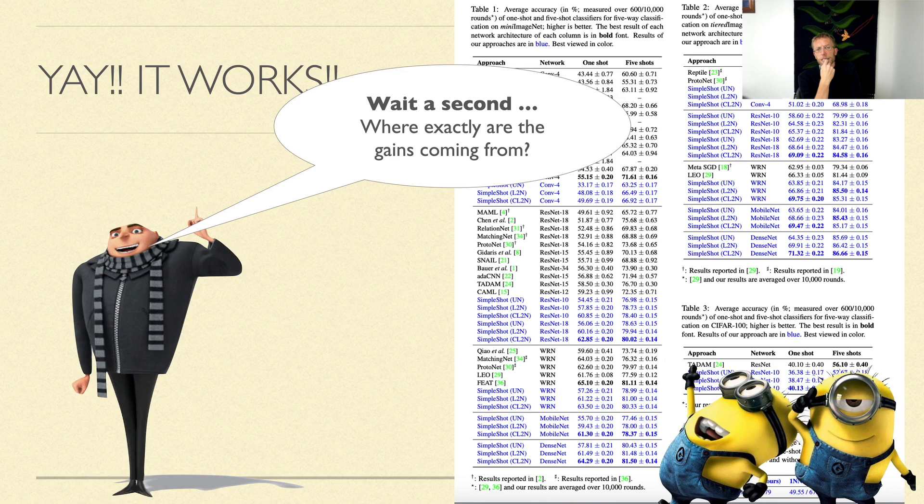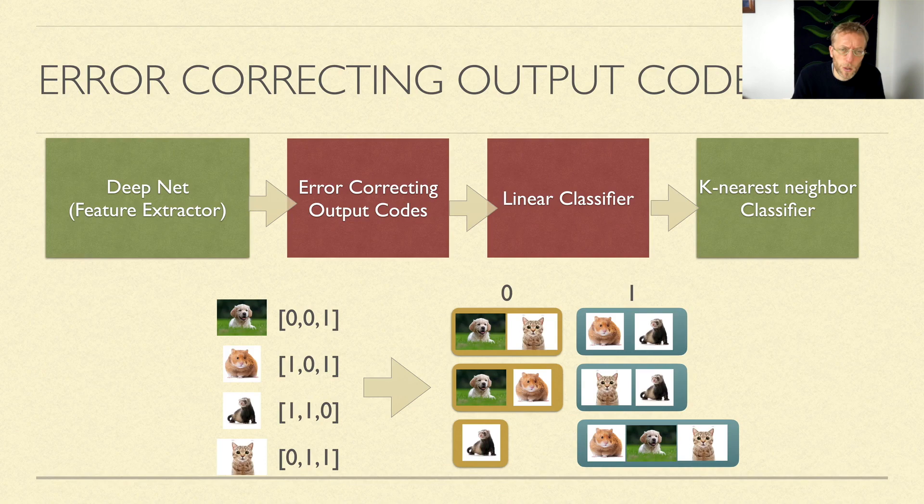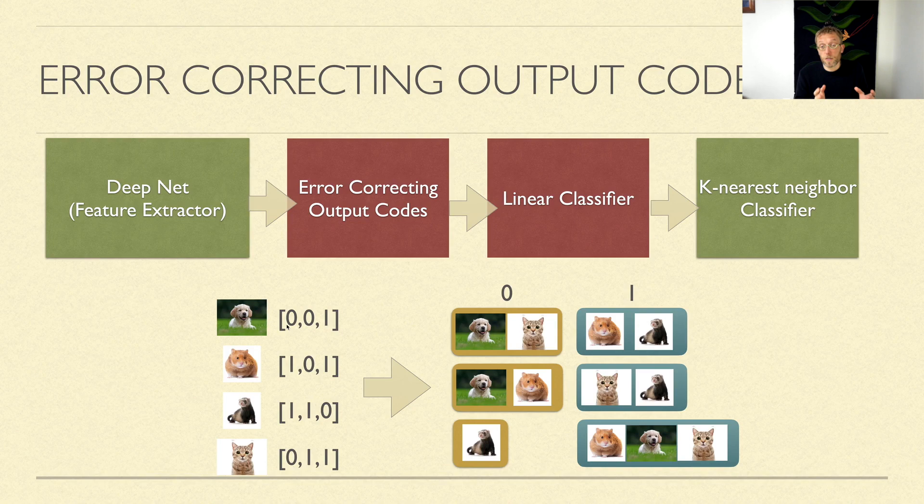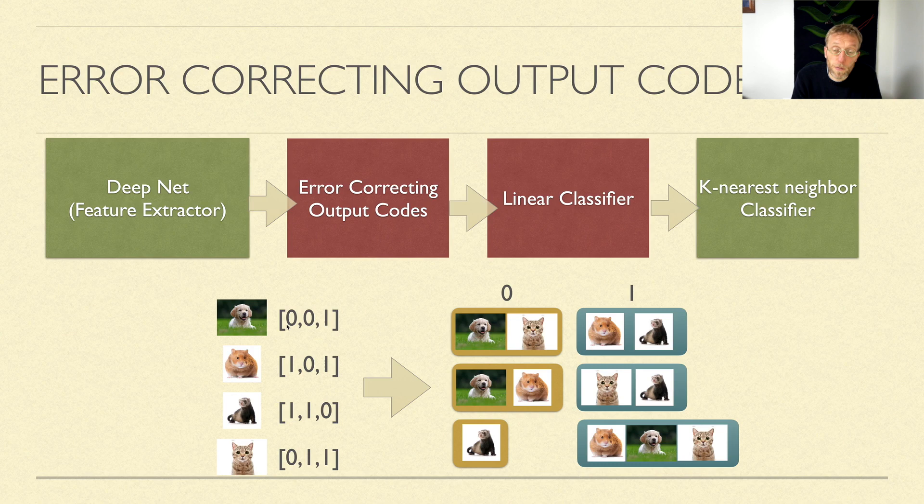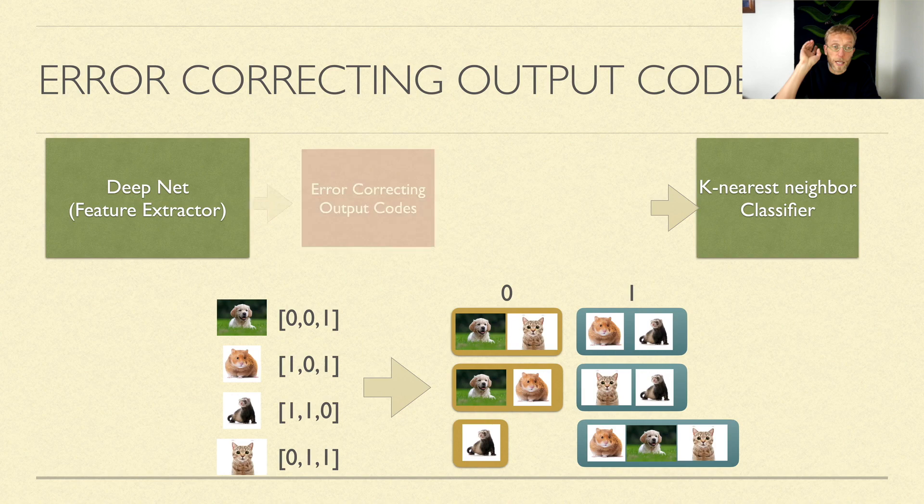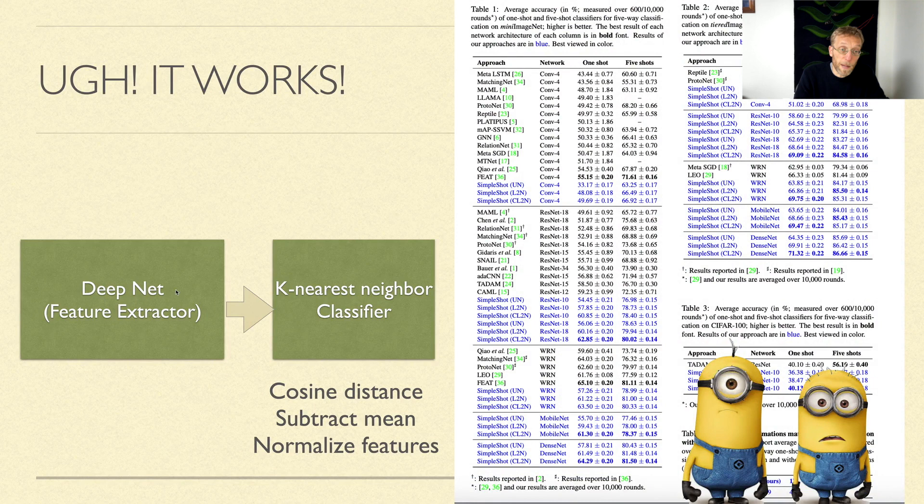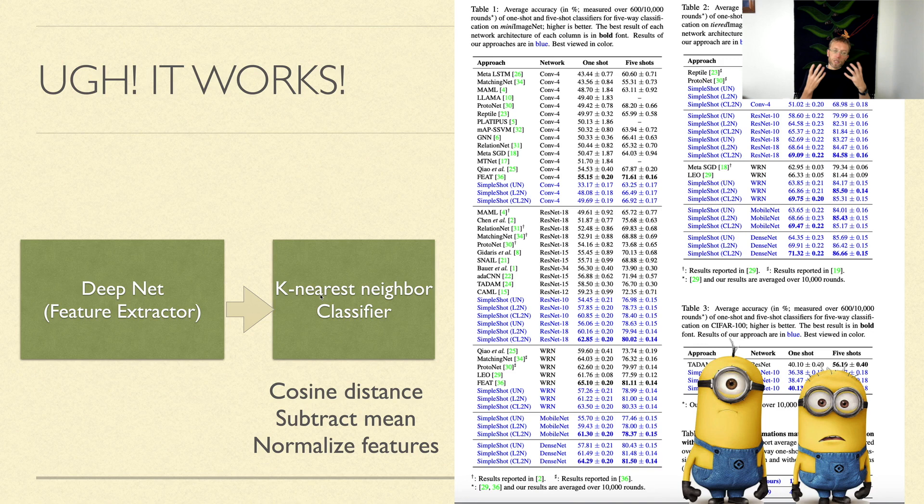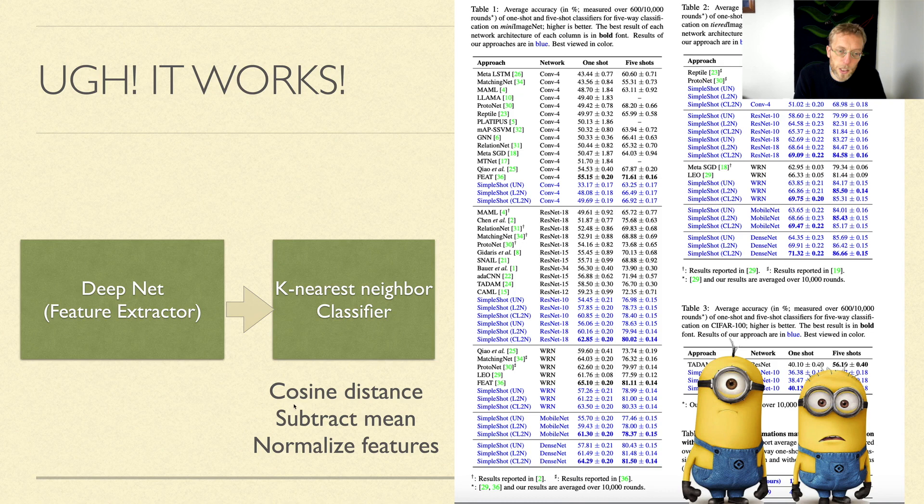What happened then is we thought, where exactly do these gains come from? So we took it all apart. We added more binary codes, took different linear classifiers, added more regularization. Very quickly we realized no matter what we did, the performance was the same. We removed the linear classifiers, just random projections - it all worked the same. We removed the error correcting output codes altogether. At the end, all we had left was taking the input, putting it through a neural network feature extractor, then just doing nearest neighbor.